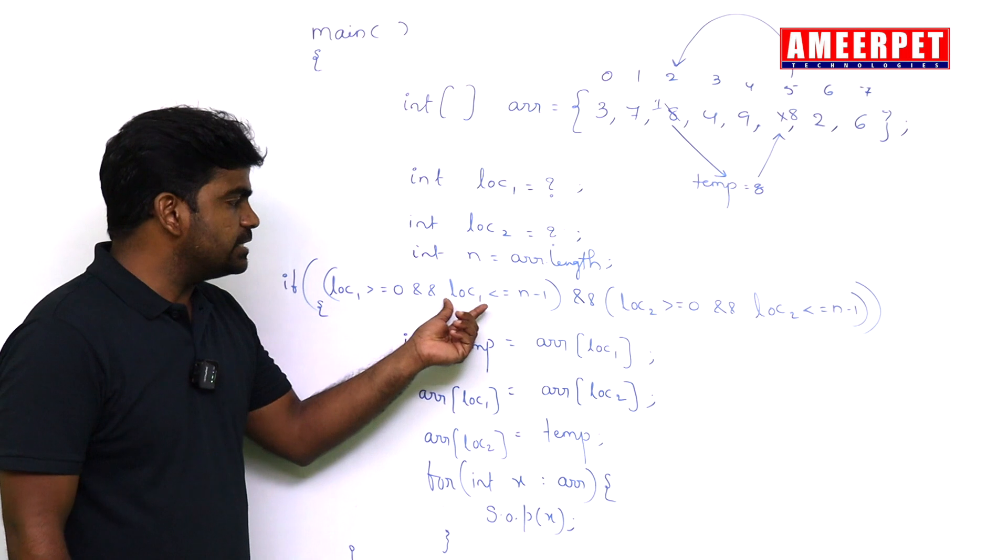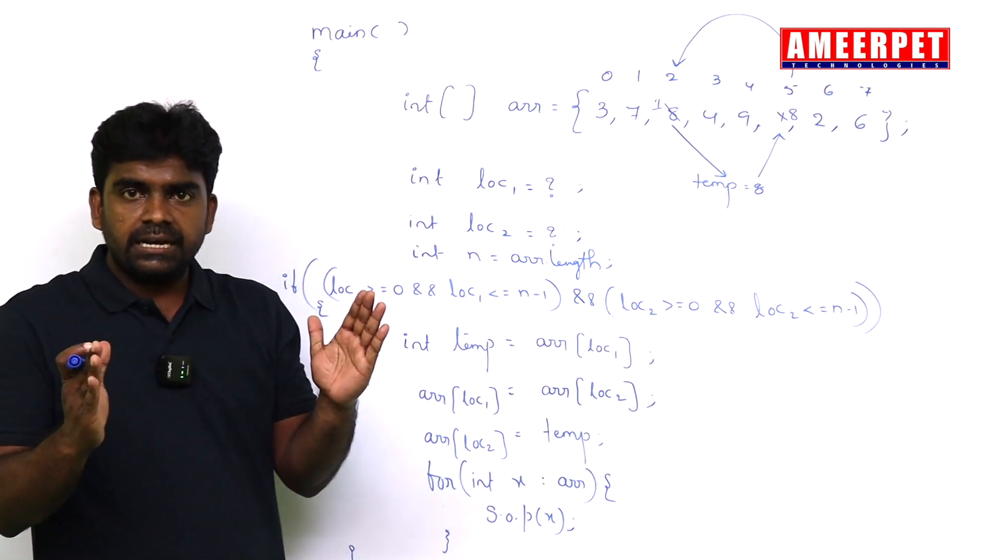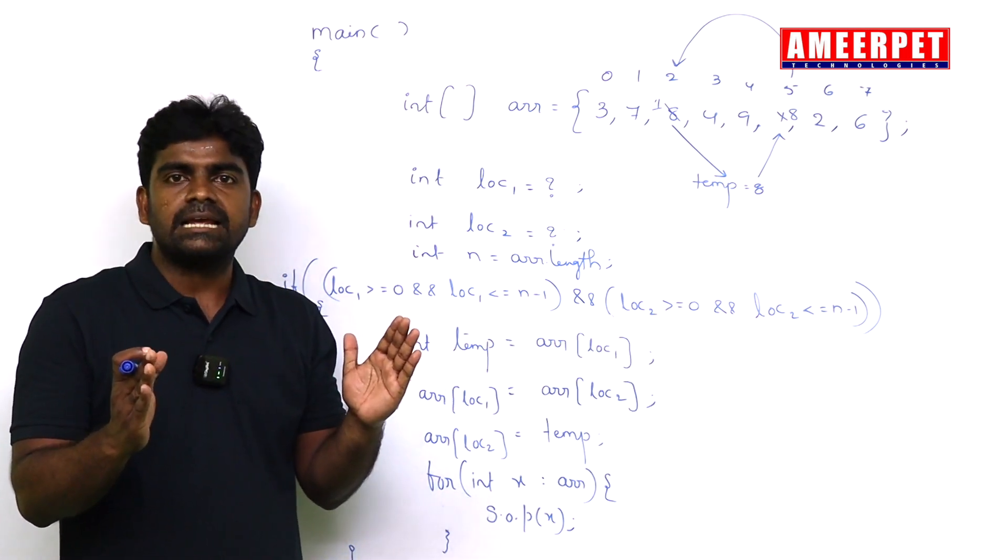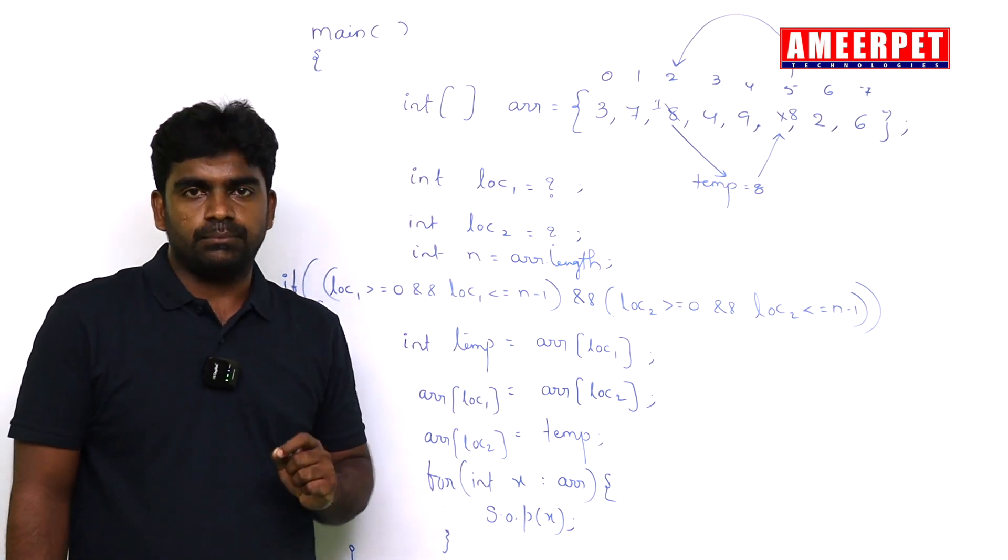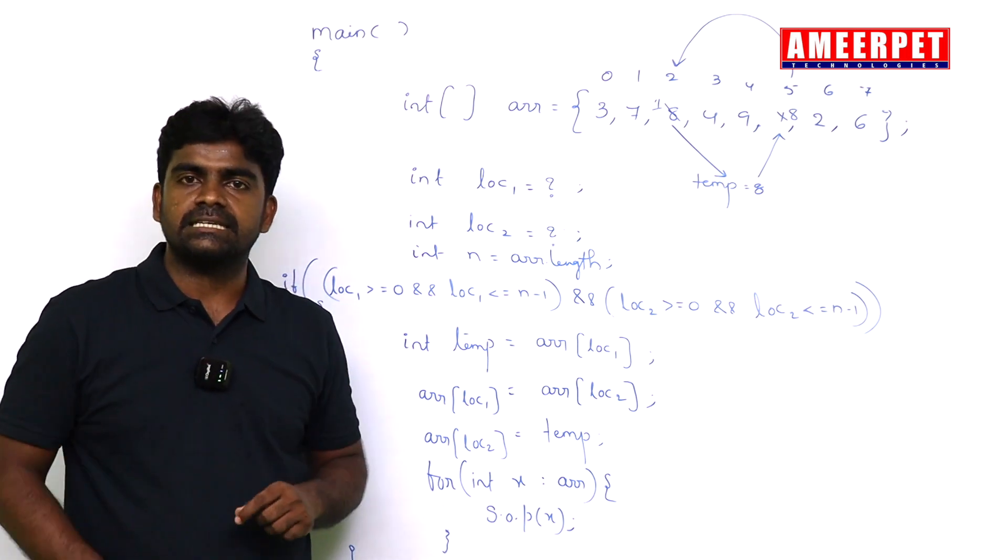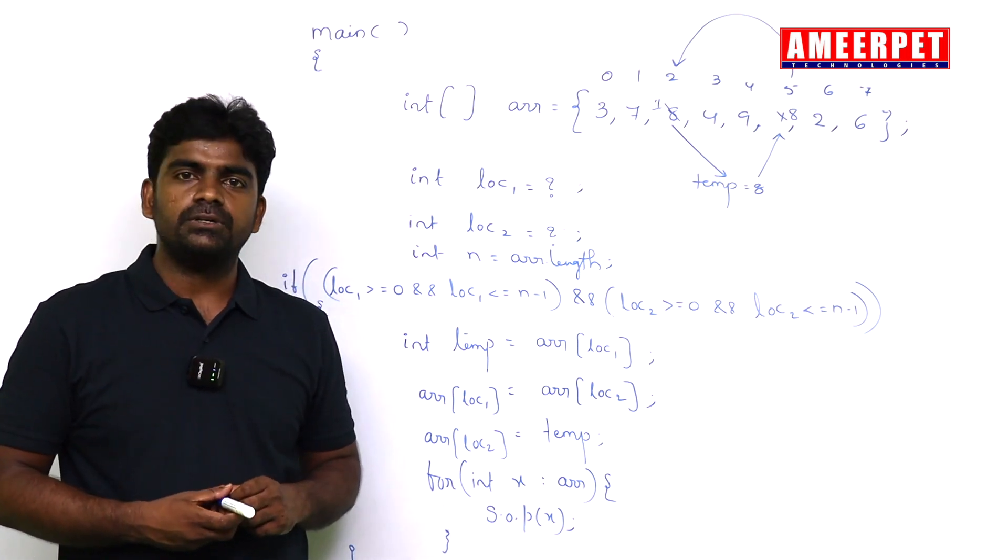If the location 1 and location 2 is within the range of array or not, we just add it. This is the simple way of swapping the two numbers of specified locations in the array. Hope you understood. Thank you.